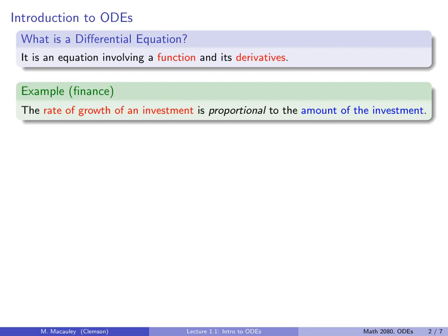Let's suppose you have an investment, and the rate of growth of this investment is proportional to its size — so it's maybe growing at a 10% rate, for example. Because p prime of t, the derivative, is proportional — proportional just means a constant r — times the amount of the investment p of t. Often we just write this as p prime equals r times p. So we're not defining the function explicitly, but we are defining it implicitly. And the question is: what type of function does p have to be?